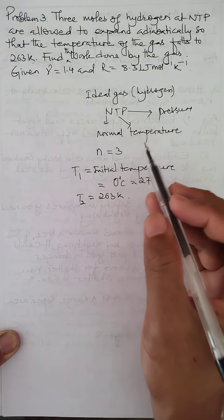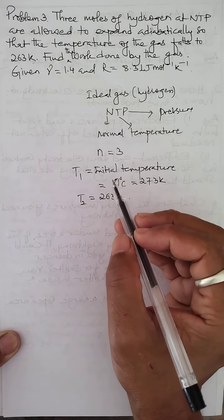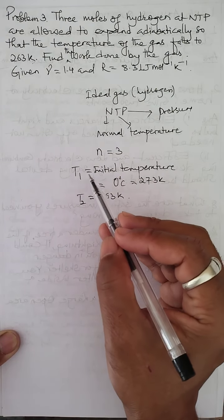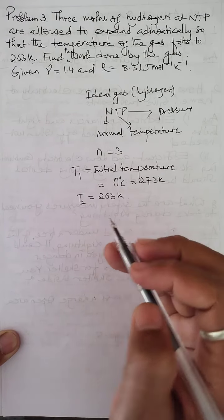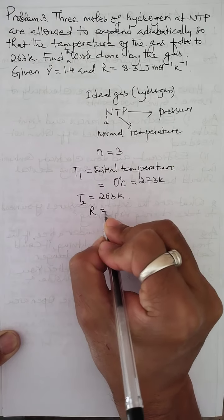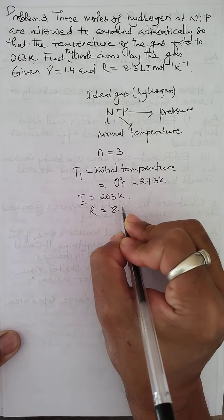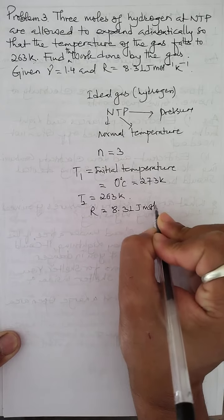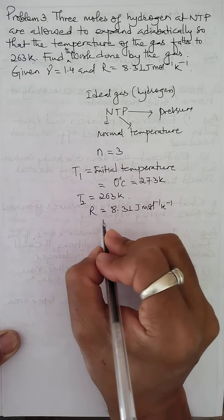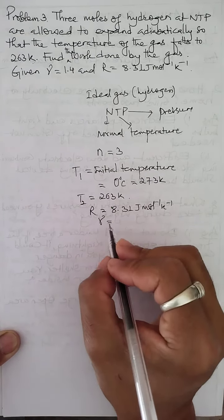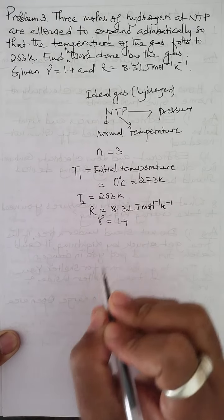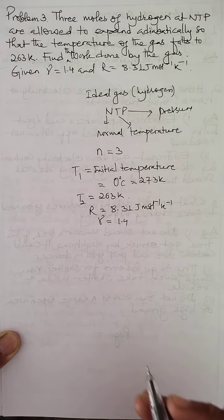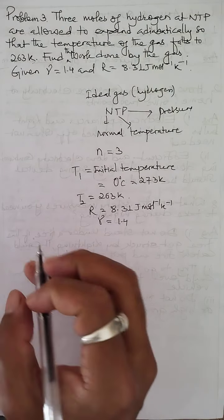We need to find the work done by the gas when the temperature falls from T1 to T2. The universal gas constant R is given as 8.31 joule per mole per Kelvin, and gamma is 1.4. We are following an adiabatic process.